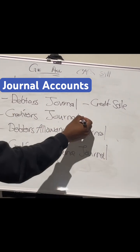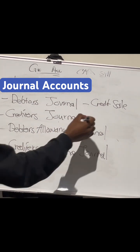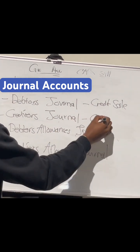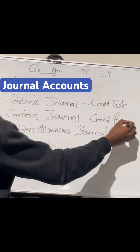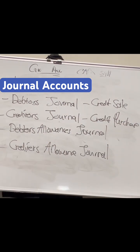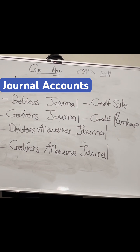And then we move on to the creditors' journal. The creditors' journal is when we, as the business, go to someone else and buy on credit. So these are credit purchases. We will have our own creditors' journal where we keep track of all of our credit purchases.